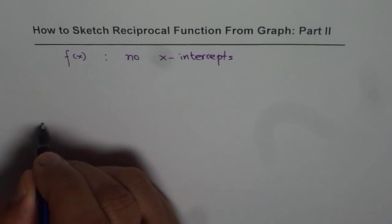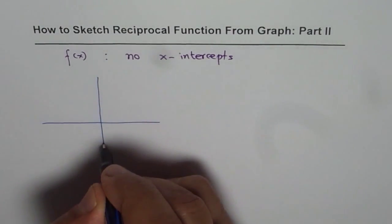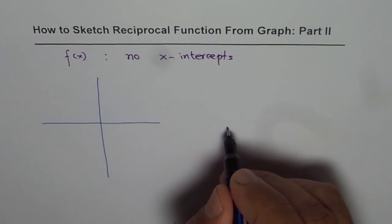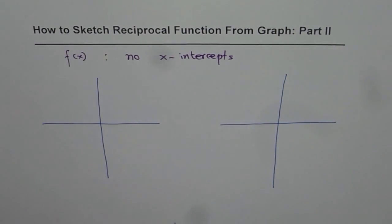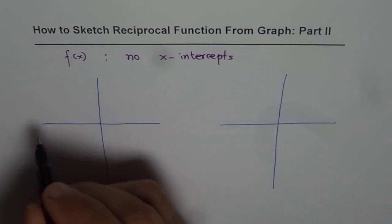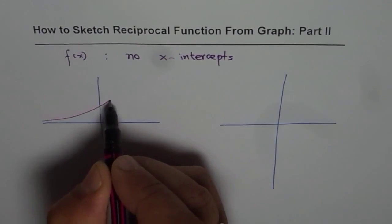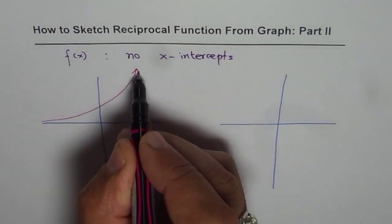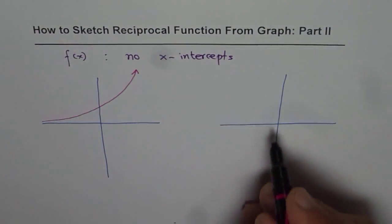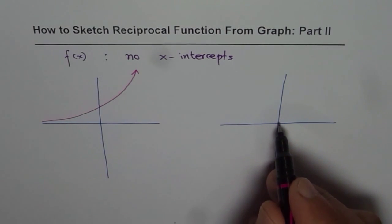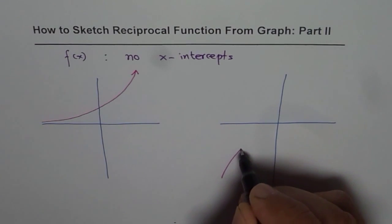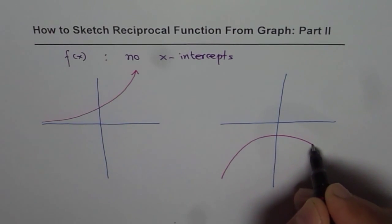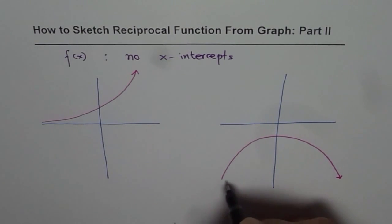Two examples are very common so let us look into both. I will draw the functions here and then consider their reciprocals. One is an exponential function — let us say it is 2 to the power of x. On the other side I will take a quadratic function, this time opening downwards. So that is our quadratic function.